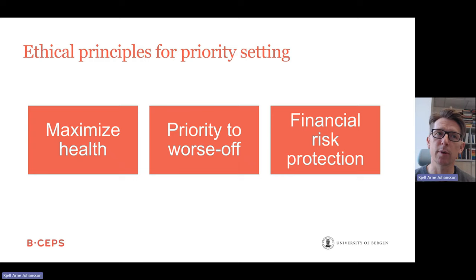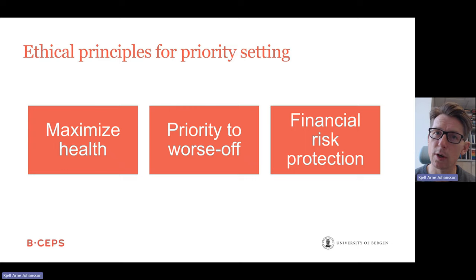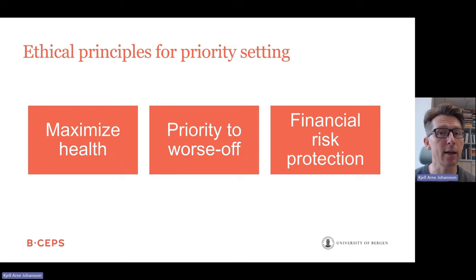We have three important ethical principles in healthcare priority setting. All ethical theories would agree that they are relevant, but people and theories would disagree on how much weight we should assign to each of them. The first principle is about maximizing health — where do we get the most bang for the buck? The second principle is priority to the worse off — how can we get more equal distribution of healthcare services? And the third principle is financial risk protection: scaling up health services and giving priority to health services without inducing medically-caused impoverishment or increasing high out-of-pocket payments.